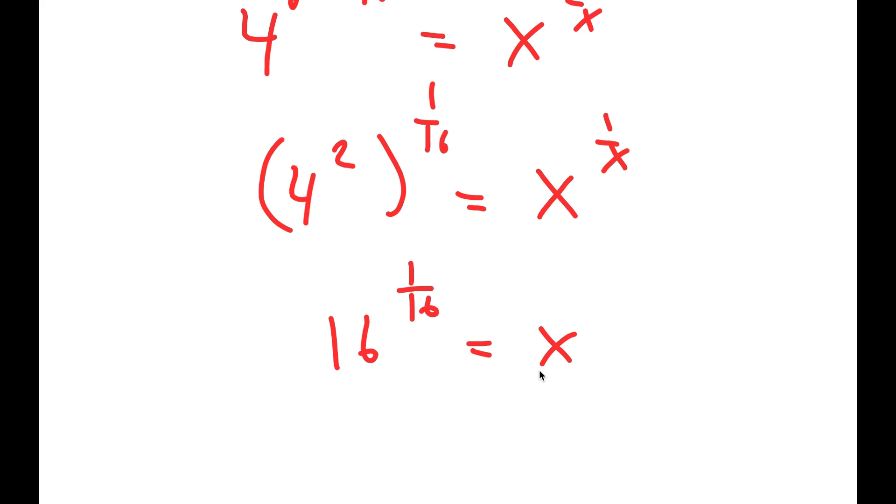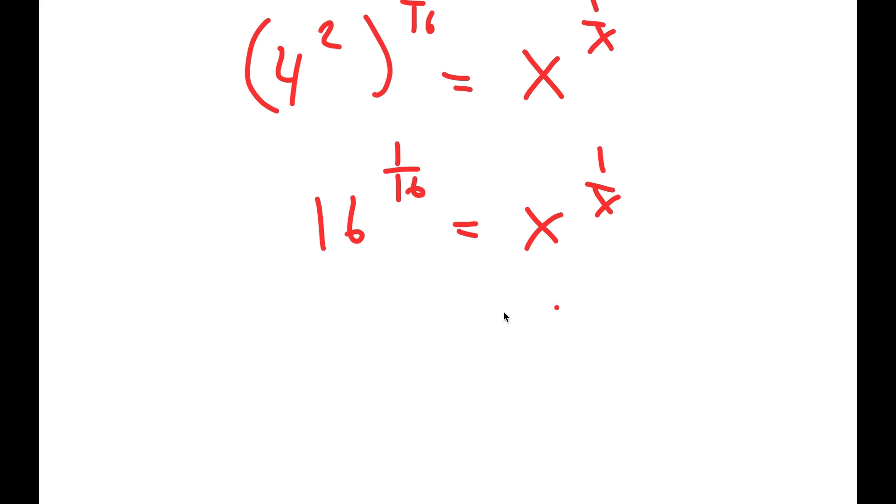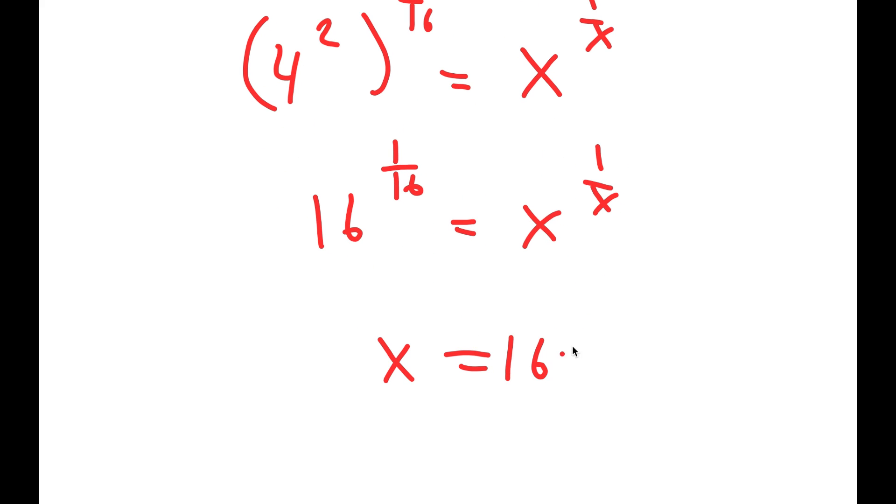So I get 16 to the power of 1 over 16 is equal to x to the power of 1 over x, meaning x is equal to 16.